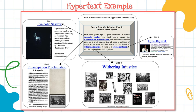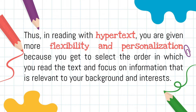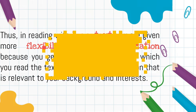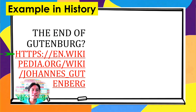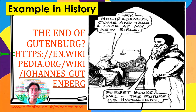A reader can skim through the sections of a text freely, jumping from one part to another. In reading with hypertext, you are given more flexibility and personalization because you get to select the order in which you read the text and focus on information relevant to your background and interests. For example, a link about the end of Gothenburg jumps to an image — a comic conversation about Nostradamus, which says: 'Say, Nostradamus, come and take a look at my new Bible.' Nostradamus answered, 'Forget about books, pal. The future is hypertext.' So hypertext is the future.